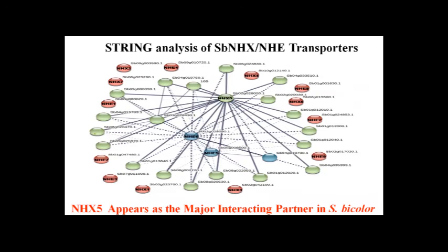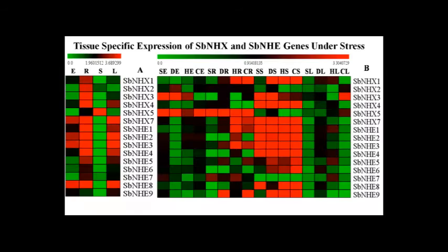We performed STRING analysis to identify protein-protein interactions among these transporters — how they interact with each other, whether they are closely related. Through STRING analysis, we identified NHX5 to be a major interactant with all others in Sorghum bicolor. We also performed tissue-specific expression analysis of SbNHX and SbNHE genes under stress conditions.